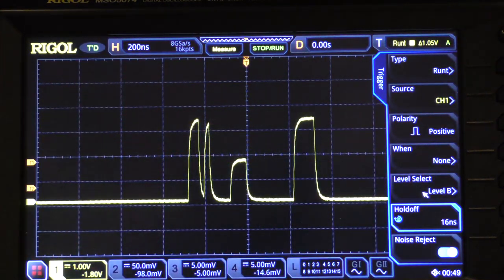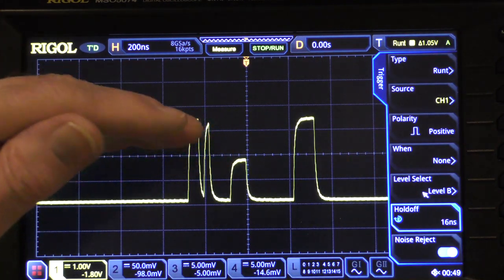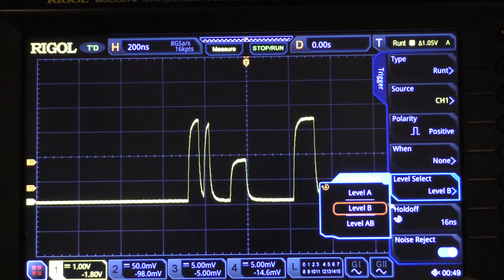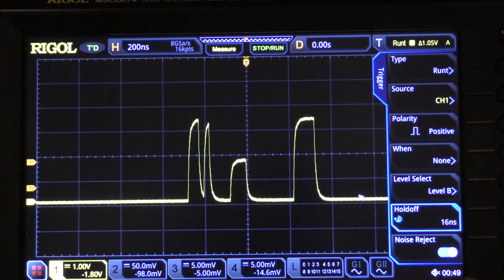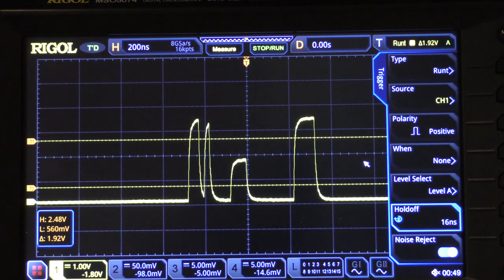Notice that a runt shows up. We were lucky because the runt turns out to be just below the midpoint. When you first enable the runt trigger, it sets both the level A and level B to the midpoint of the waveform. But let's adjust level A a little bit so you can see that, and there is level A, the top level.